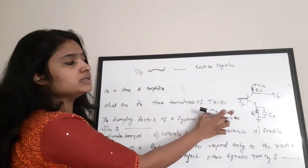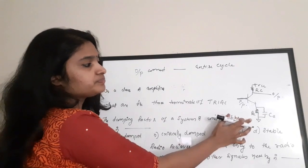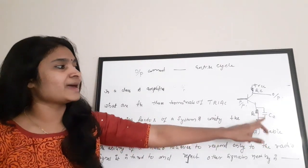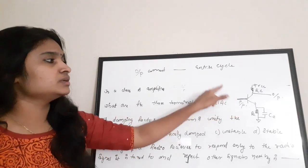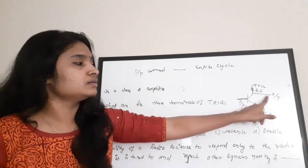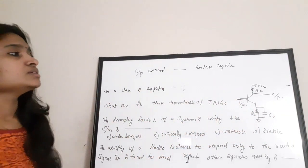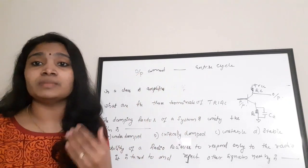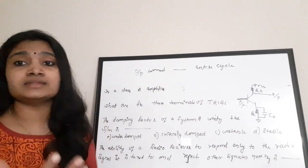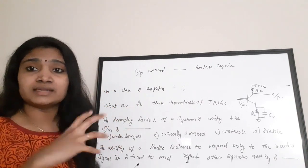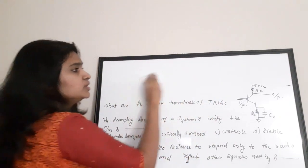Here is how a Class A amplifier looks. Input is applied to the base region, output is taken from the collector side, with an emitter capacitor connected in parallel to the emitter resistance. There is also a voltage divider biasing circuit and a load resistor at the output. The main feature of a Class A amplifier is that the output current flows during the entire AC cycle — the complete input signal is amplified at the output.